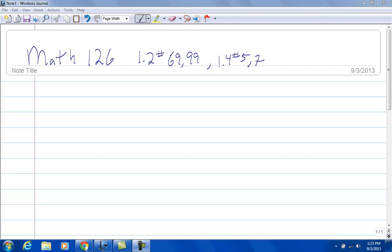So 1.2 number 69, that says it's the negative 6th root of 64.